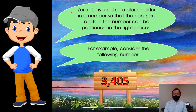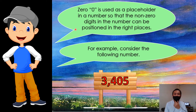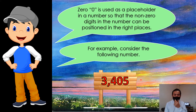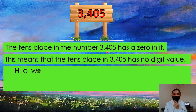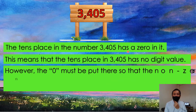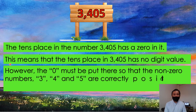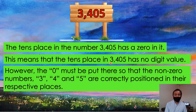0 is used as a placeholder in a number so that the non-zero digits in the number can be positioned in the right places. For example, consider the number 3,405. The tens place in the number 3,405 has a 0 in it. This means that the tens place in 3,405 has no digit value.